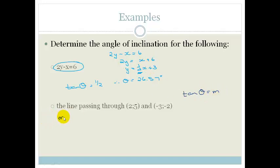And we know that m is equal to y2 minus y1 over x2 minus x1. So therefore, if we let this be x1 and this be y1 and this be x2 and this be y2, then we can substitute in and get the gradient.